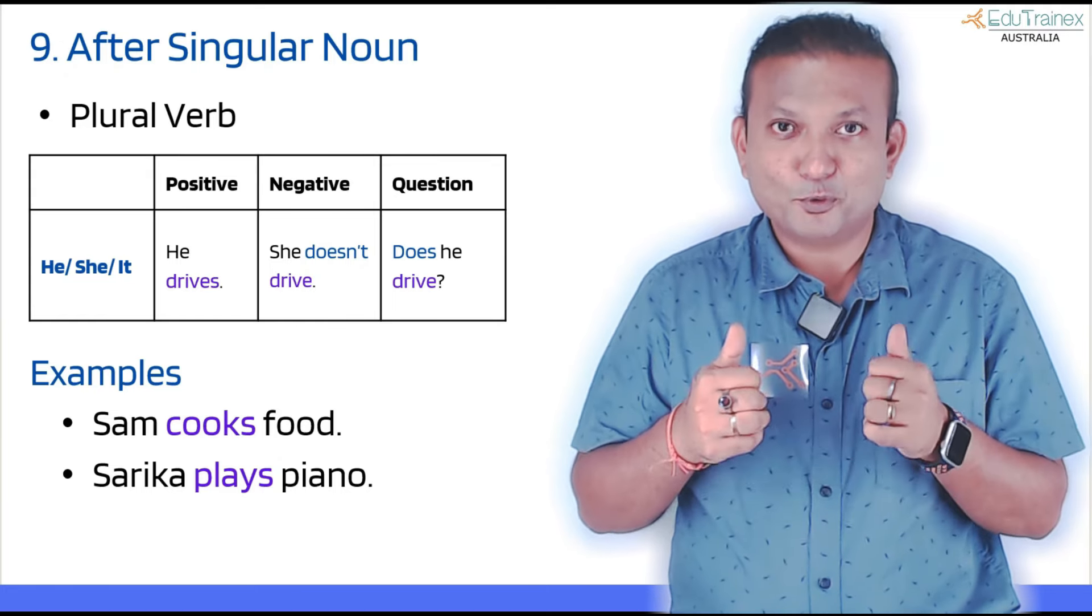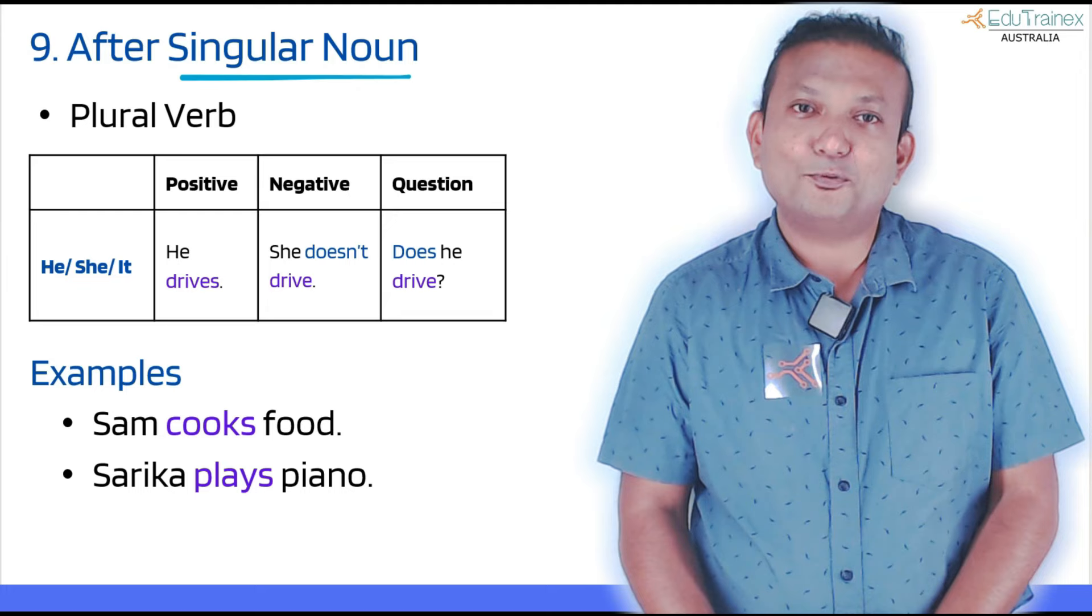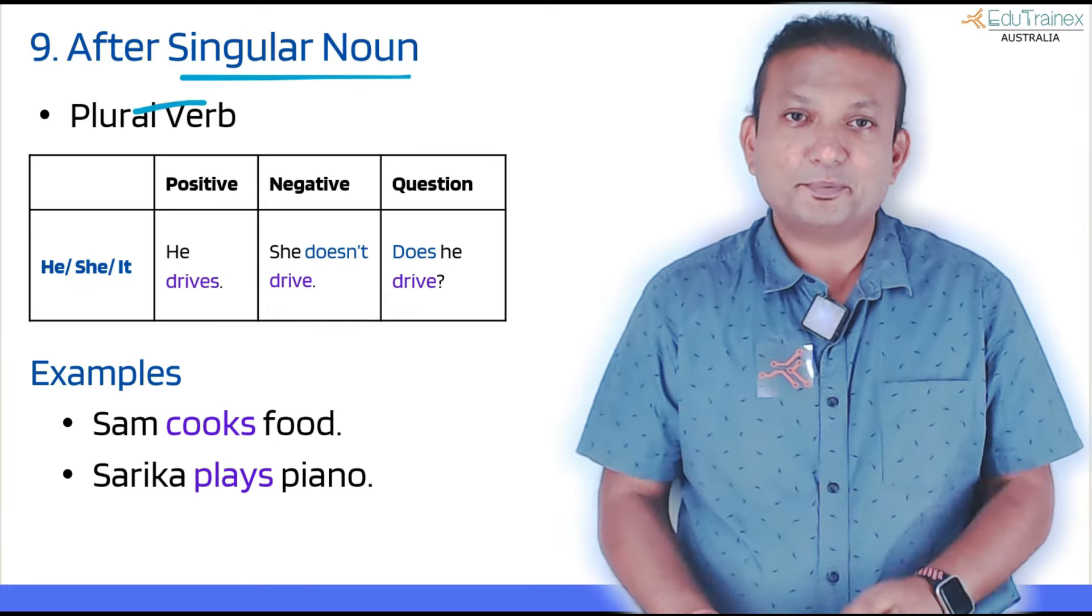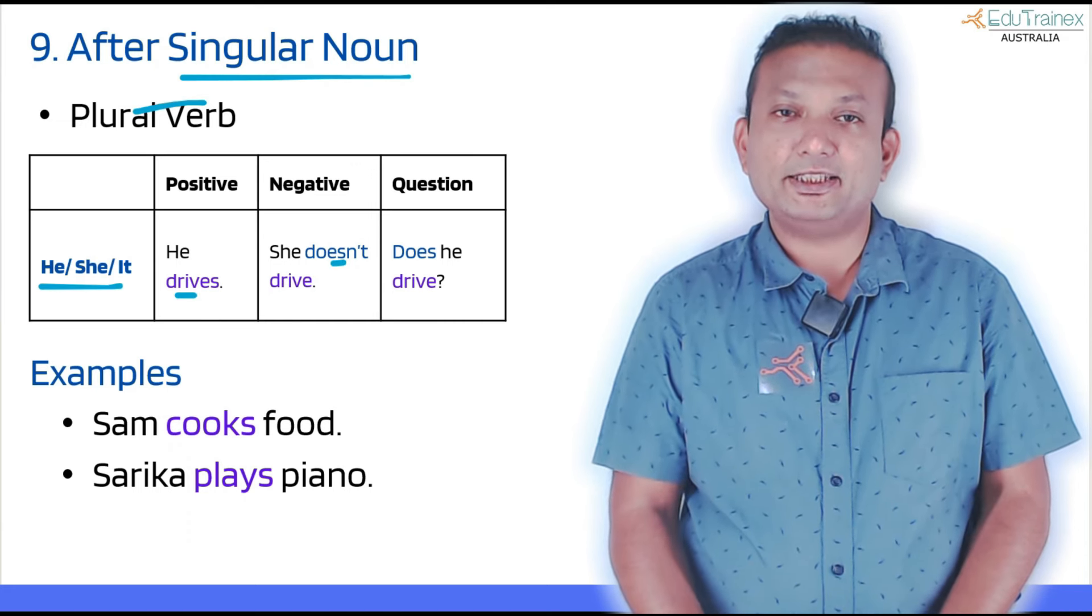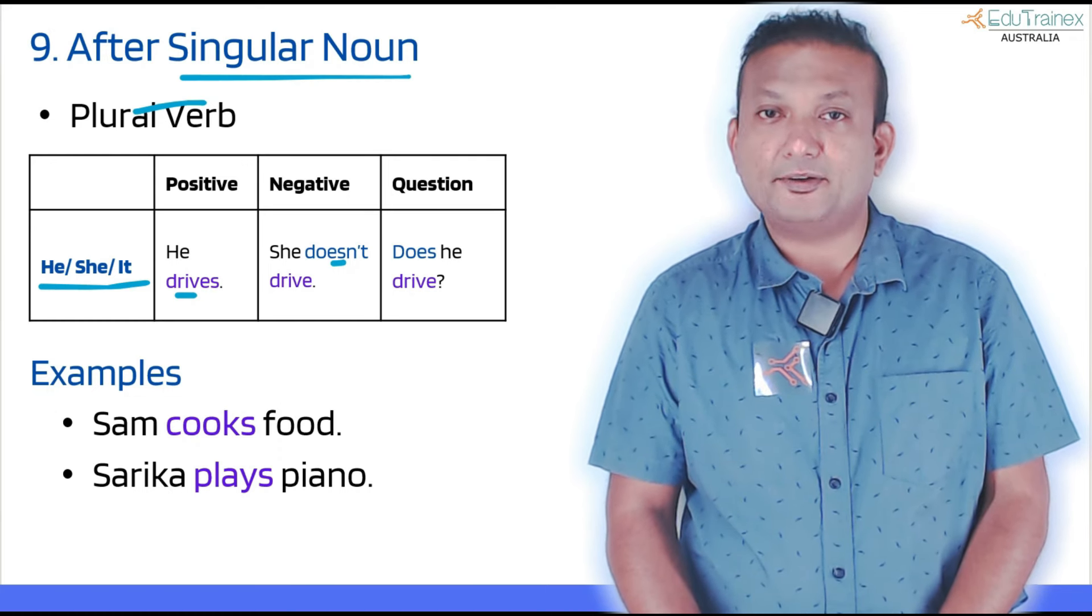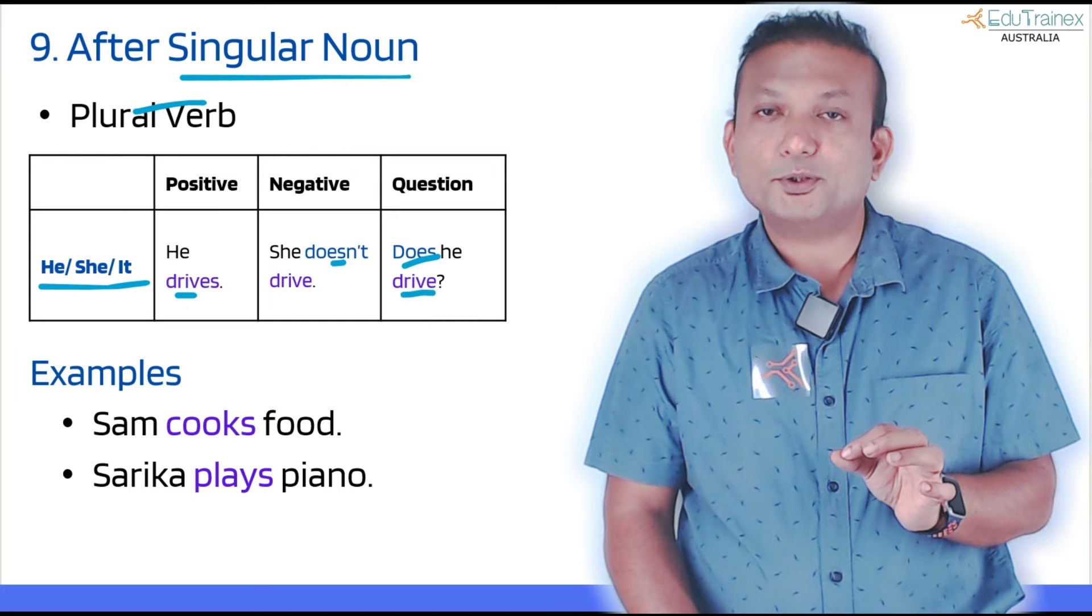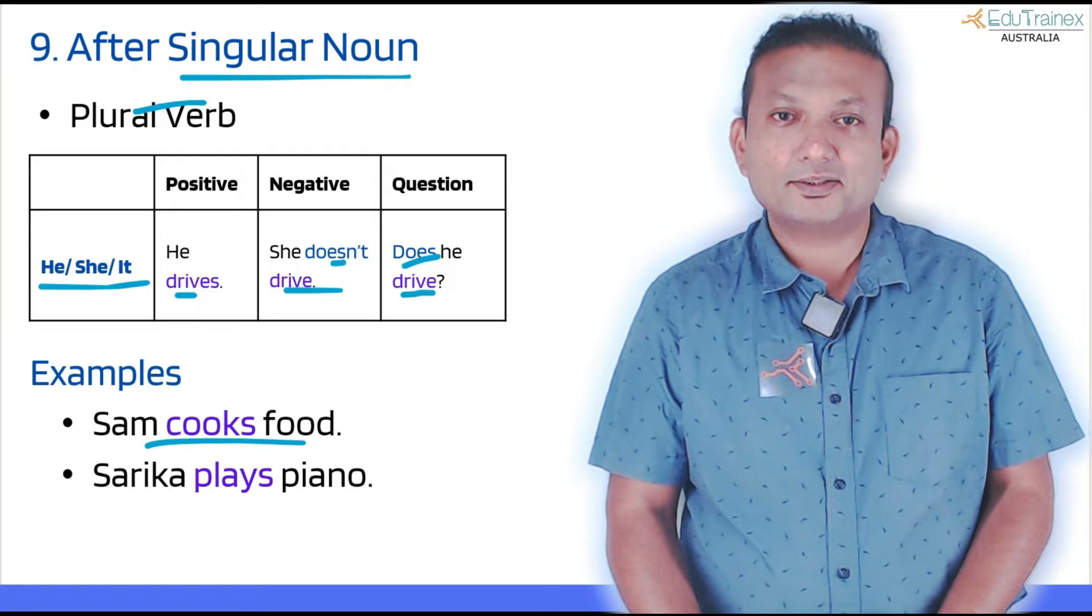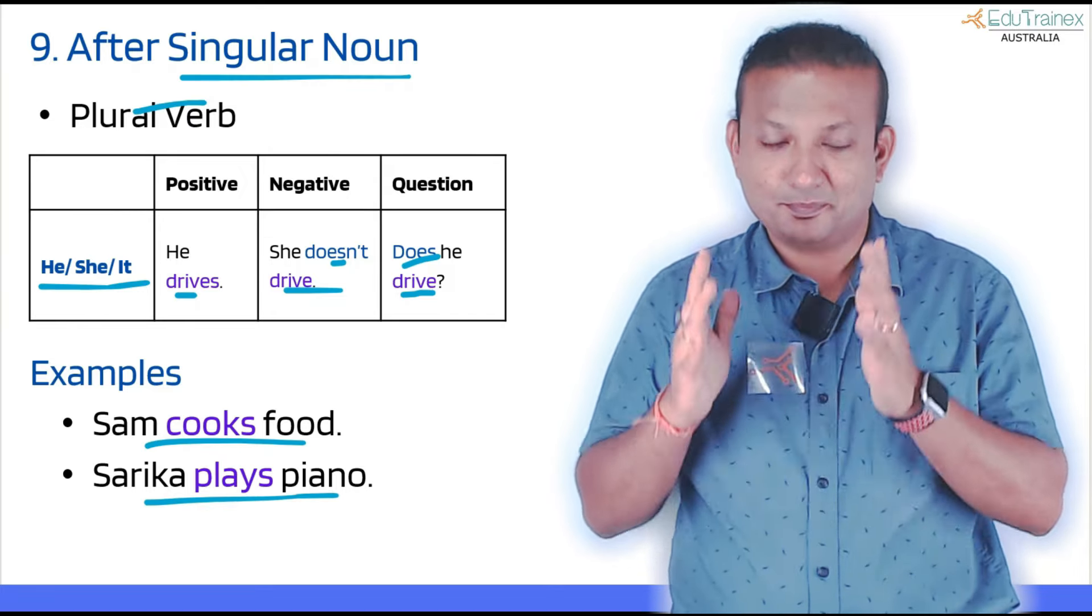The first one, and a really important one, is what comes after a singular noun. A plural verb comes after singular noun. The only exception is when we are using 'does.' See the table here. It applies to he, she, it, or singular noun. You can see 'he drives,' 'she doesn't drive,' 'does he drive?' In these cases where you have used 'does,' see that the verb changes back to singular. That's the only exception. But see the examples here: 'Sam cooks food,' 'Sarika plays piano.' So singular noun, plural verb.